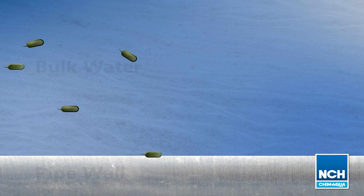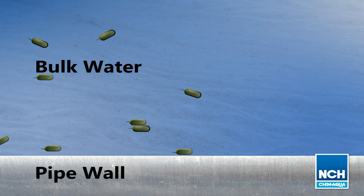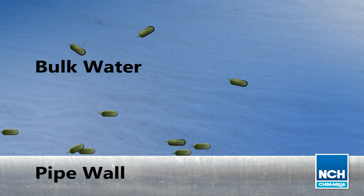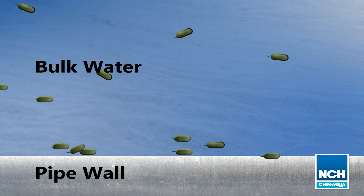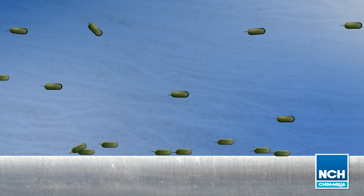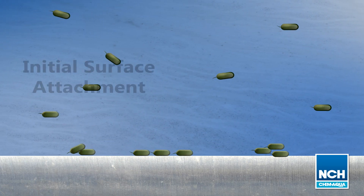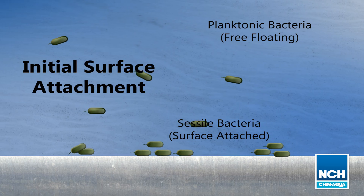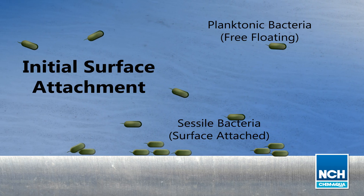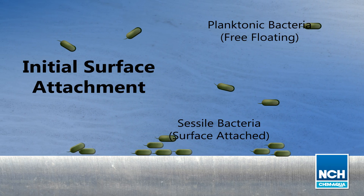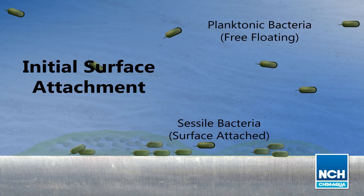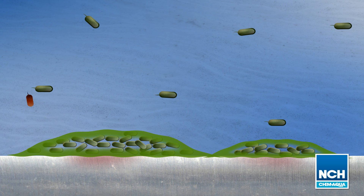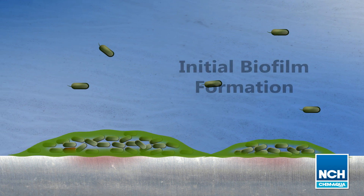Biofilms form when free-floating bacteria in the bulk system water attach to surfaces such as pipe walls, showerheads, chillers, and basin walls. Attached bacteria produce an extracellular polymeric substance, or slime, that holds the growing biofilm together.